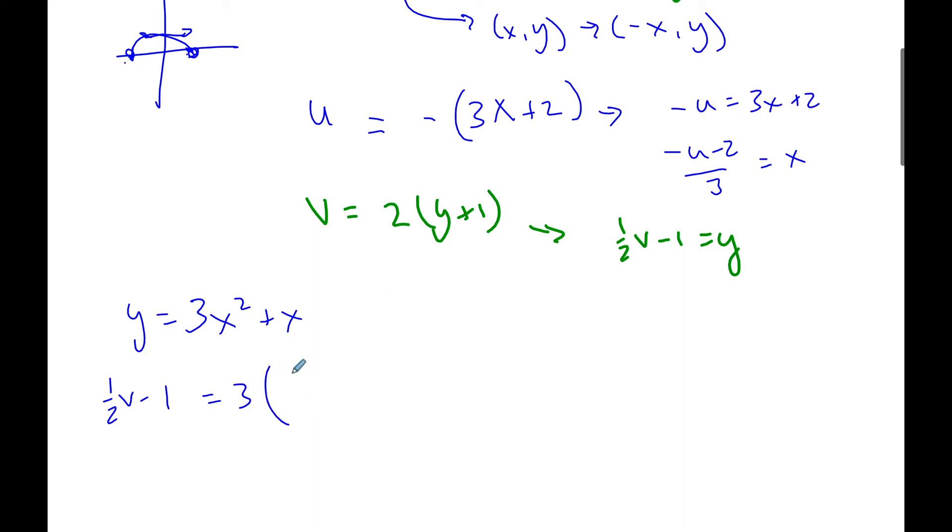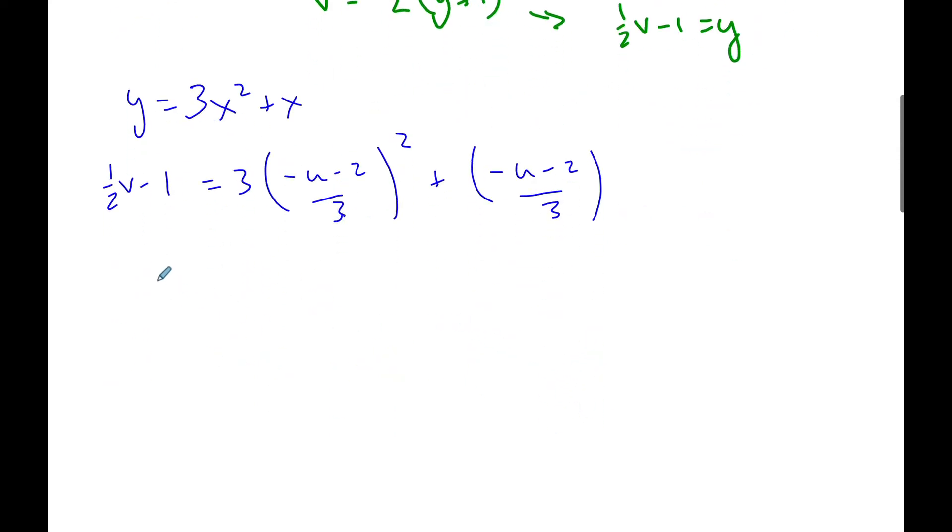And now I just do the algebra. Substitute this in negative u minus 2 over 3 squared plus a negative u minus 2 over 3. And I'm going to start to do some algebra here.